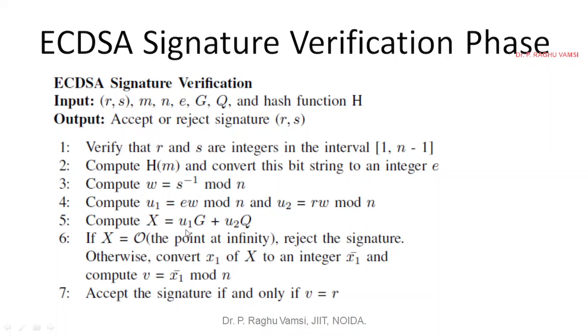Now compute X equals u1 into G plus u2 into Q. So G is the public key, G is the key where you have agreed on, and u2 into Q.